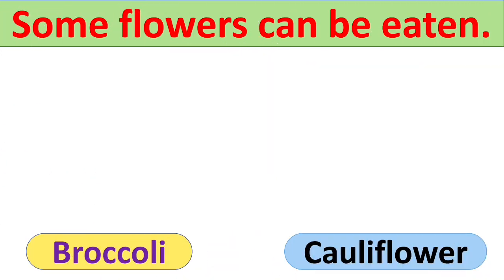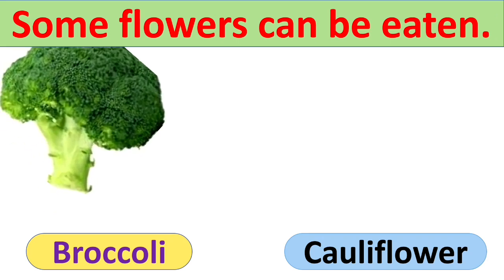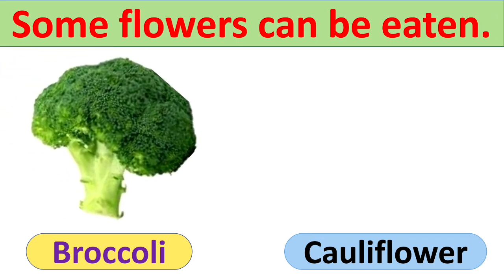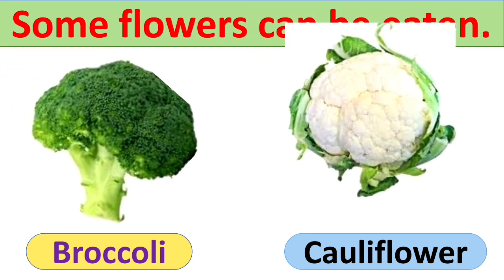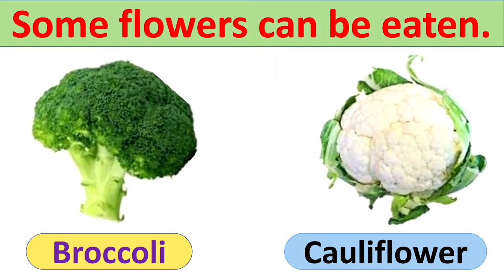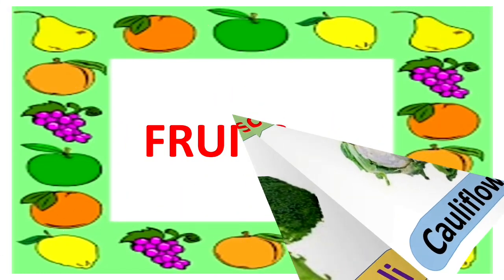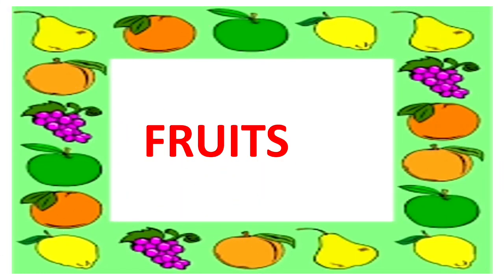Dear children, we also eat some flowers like broccoli and cauliflower — we use them as a vegetable. So next is fruit.